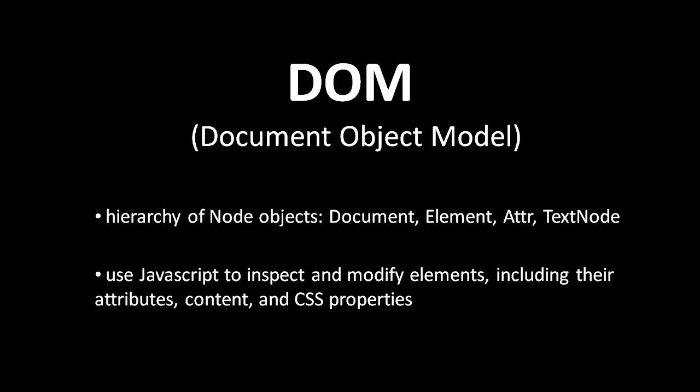If a tag in your HTML has an attribute, that shows up as an attribute node. If a tag has other tags in its content, those show up as child elements. If the content of a tag has text in it, the text shows up as text nodes. So again, the DOM is just an expression of our document — in this case HTML — as a big tree of node objects all arranged in one big tree.